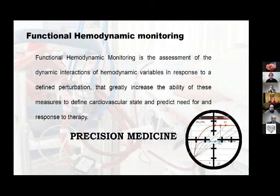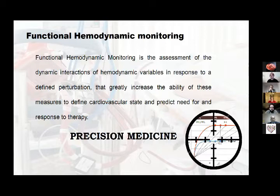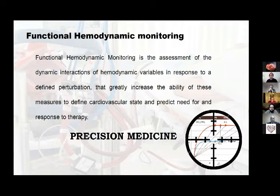We need to measure hemodynamics to know where we are, what we need, and where we need to go. Precision medicine means measuring all the variables we can to understand the physiology and pathophysiology, and to know how to react precisely to the hemodynamic status. Not every patient is the same because the pathophysiology is not the same.